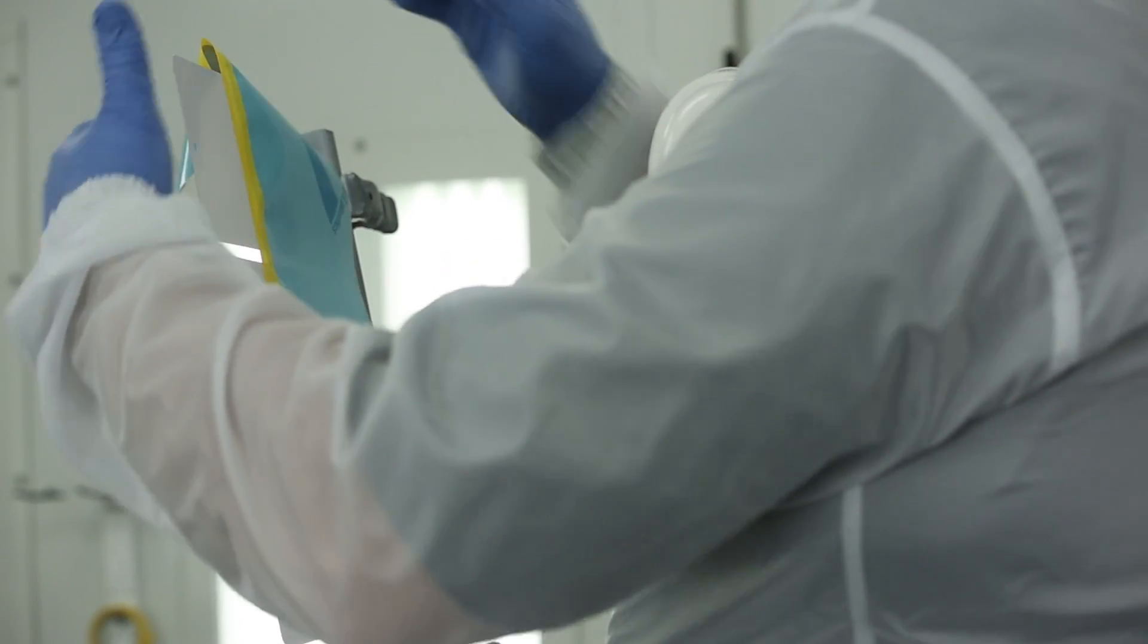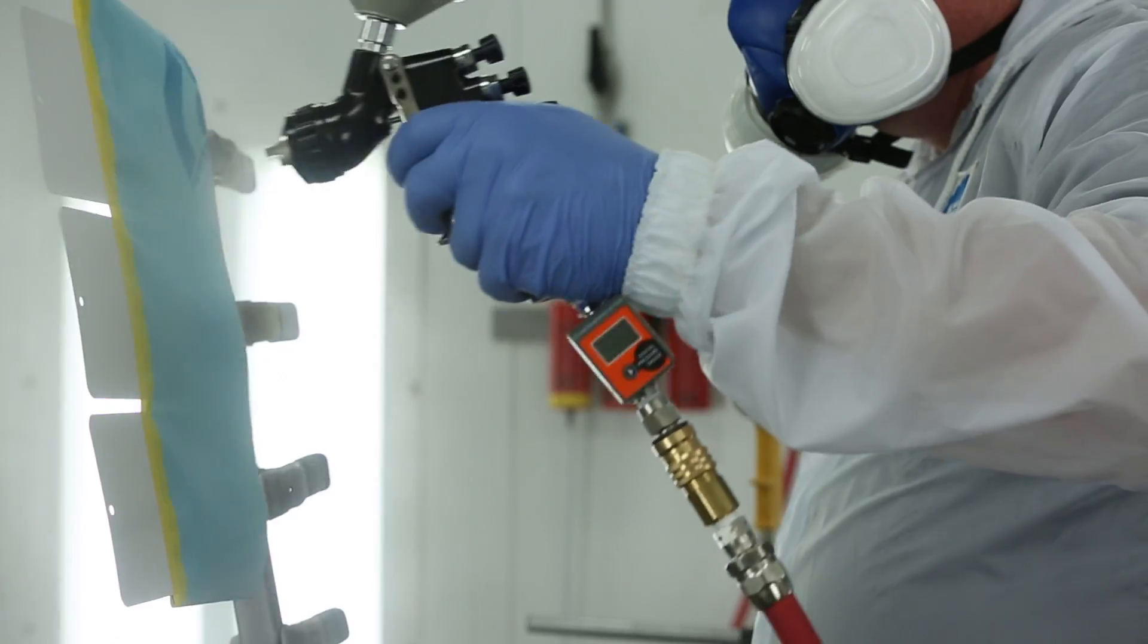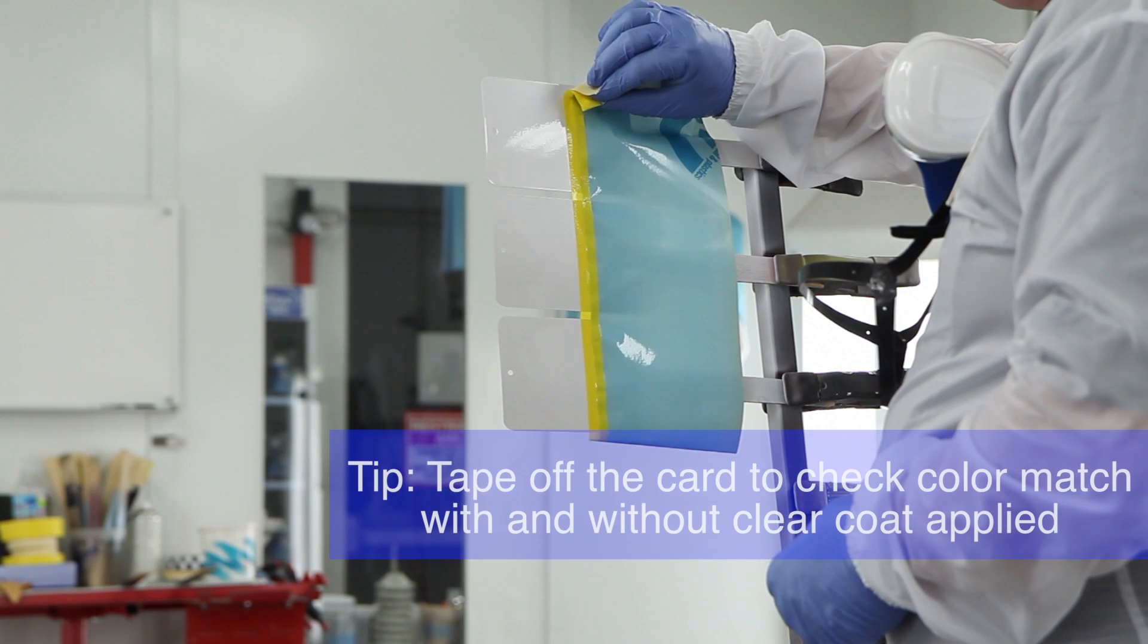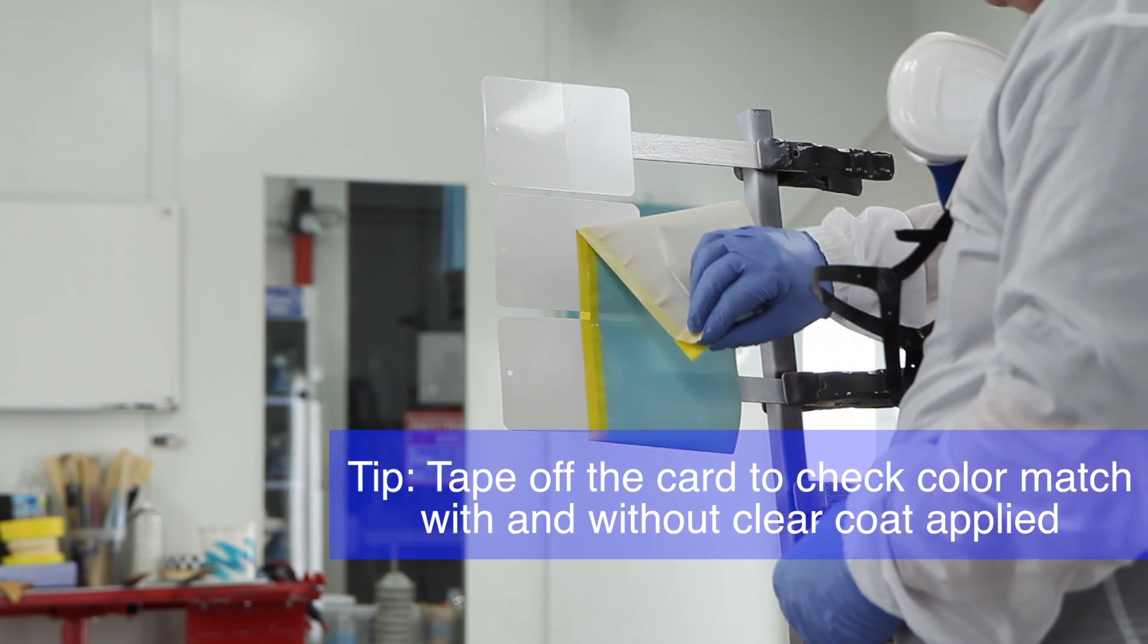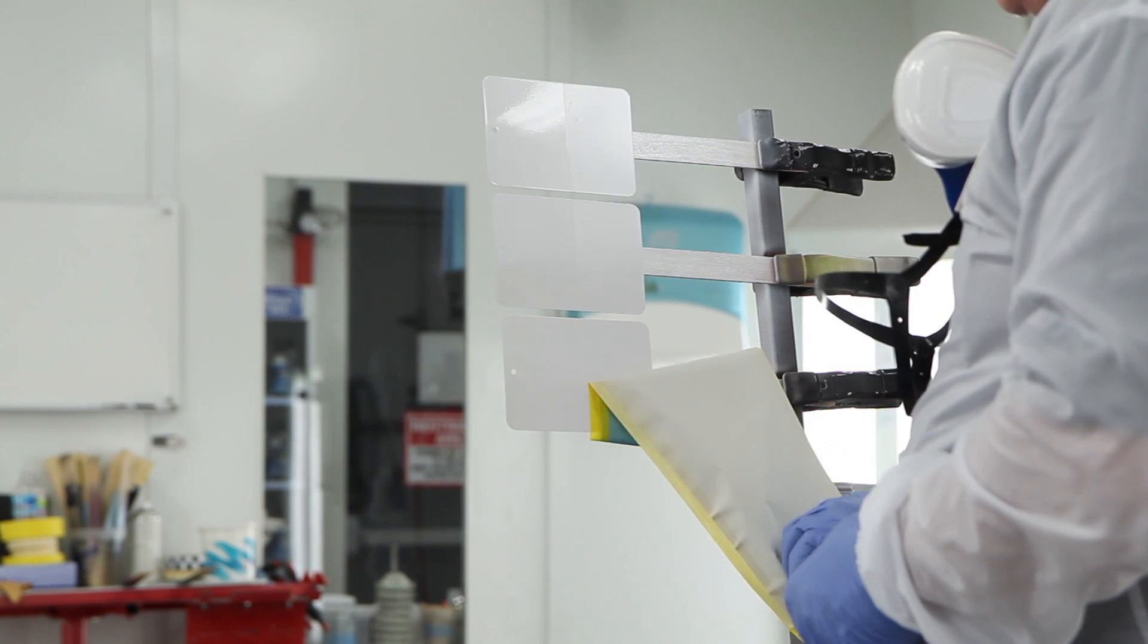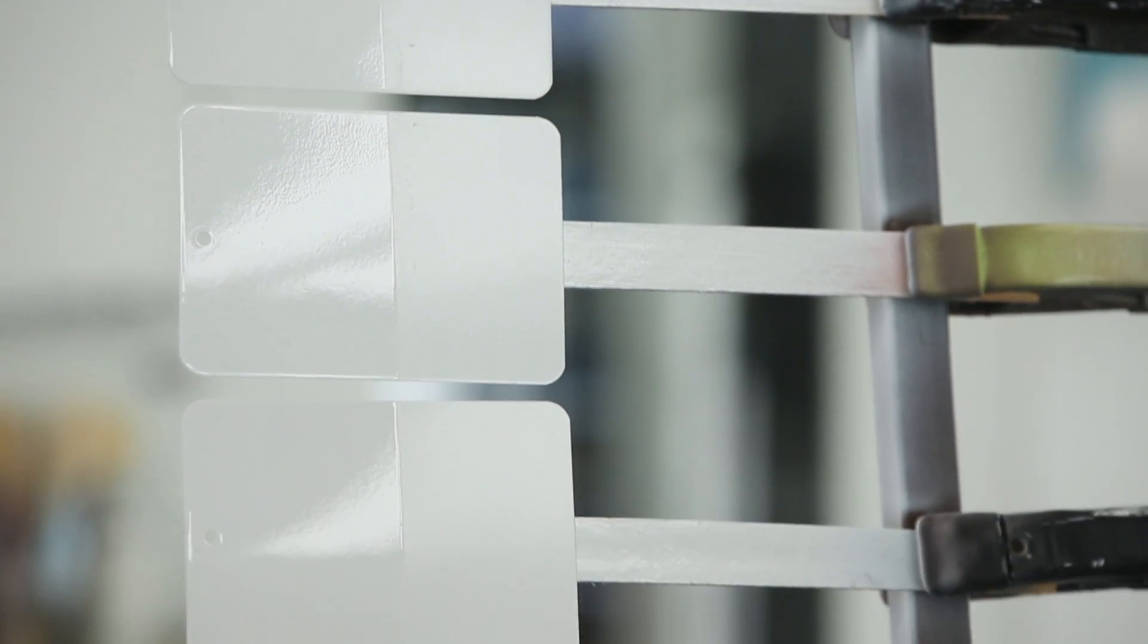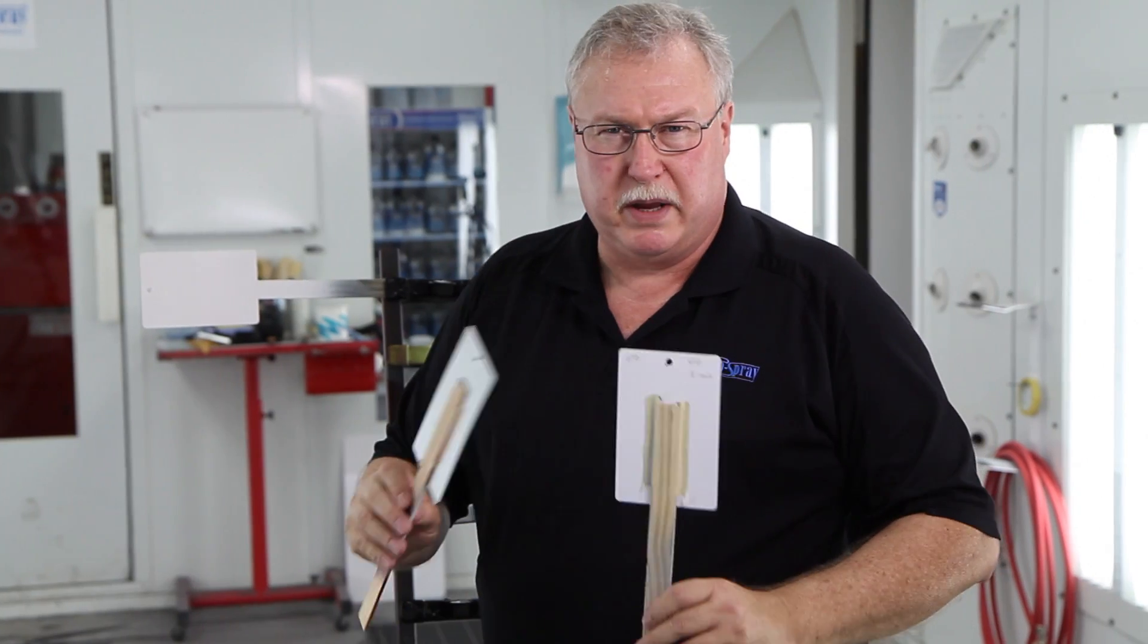Once they've all flashed off, tape off half the panel and clear coat the panels that have the mid coat on there. And that way you can go back later and check your color match to the vehicle with and without clear. And you have a progression of one, two, and three mid coats.